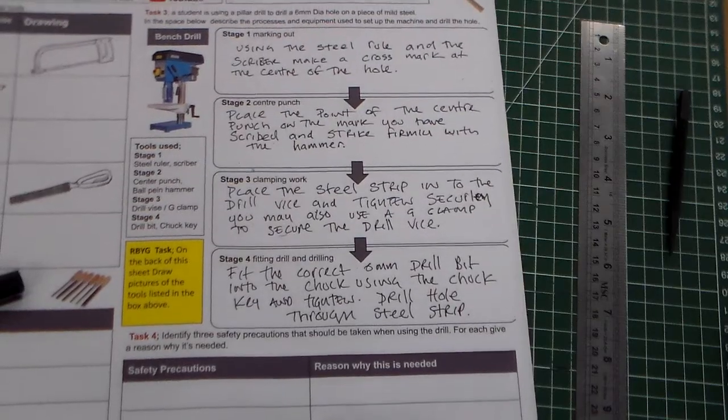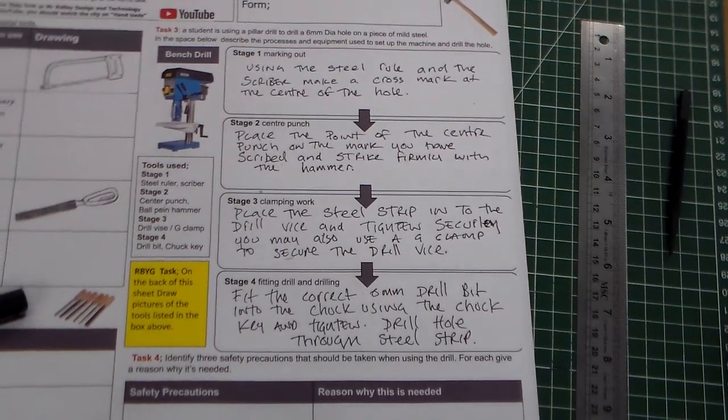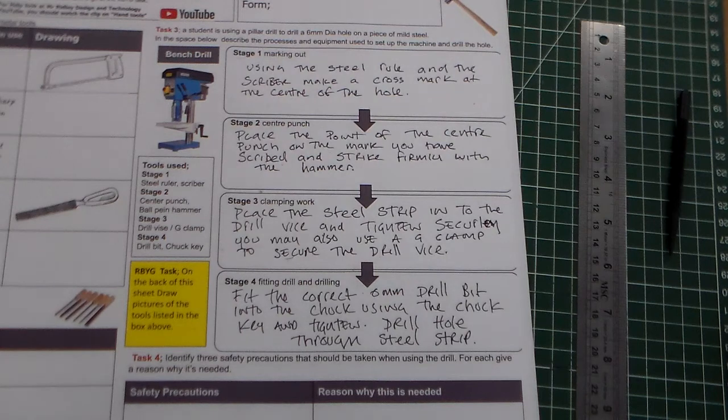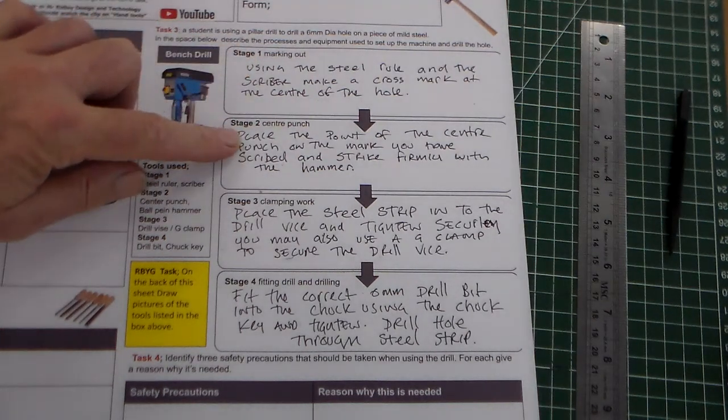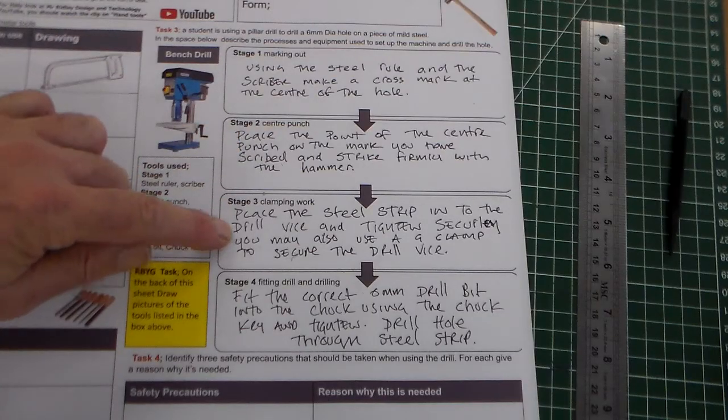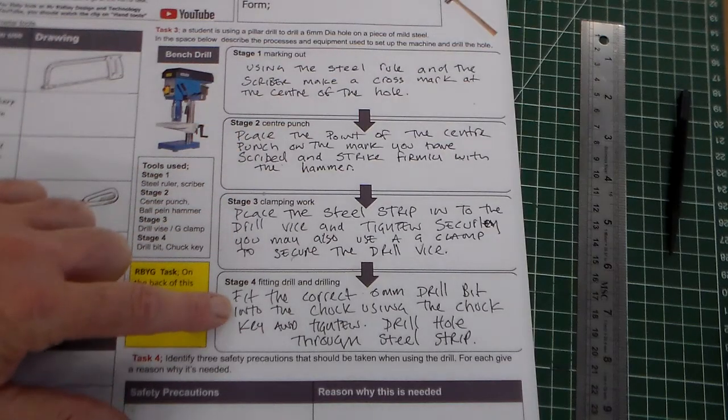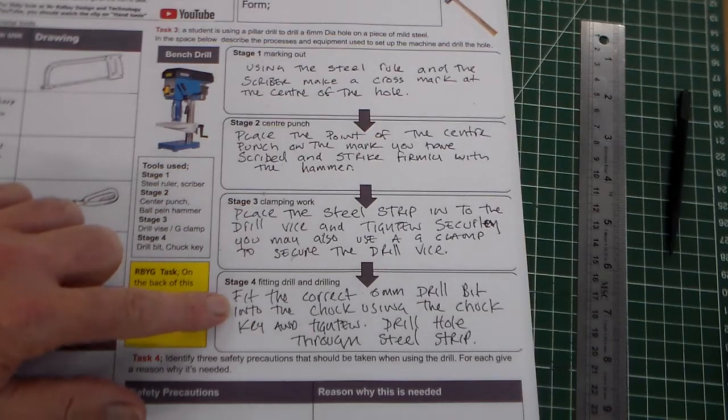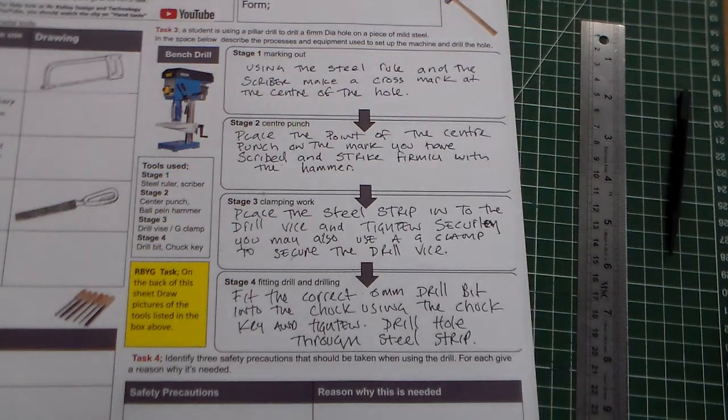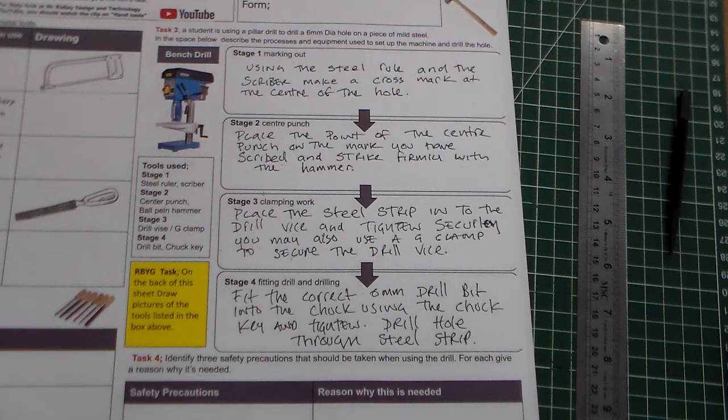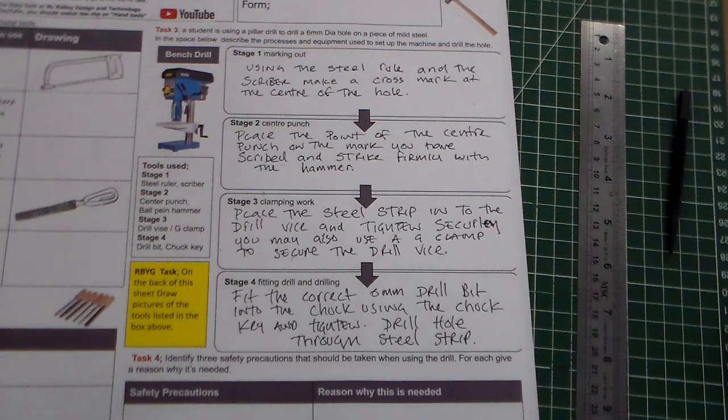So, there we have it. I think we'd get ten marks for that, if that was a ten mark question. Stage one, marking out. Stage two, centre punch. Stage three, clamping the work. Stage four, fitting drill and drilling. So, that is the tools for metal GCSE style question. Thank you for watching Mr Ridley's Design and Technology.